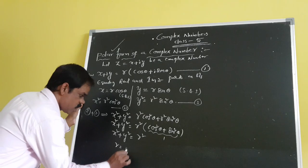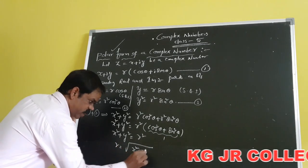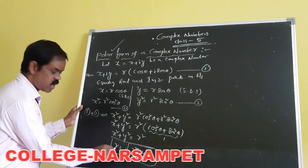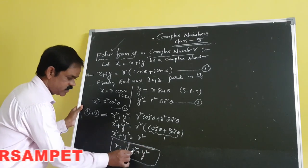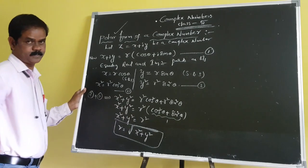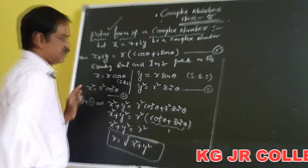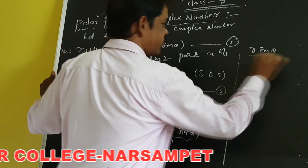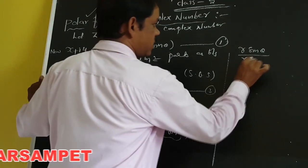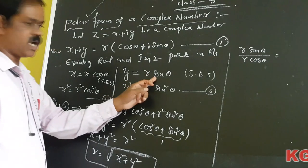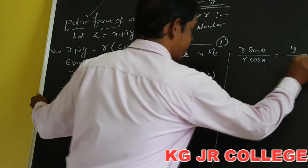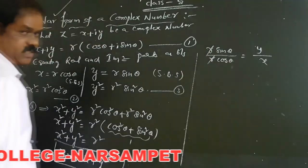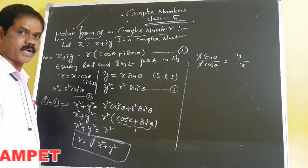Therefore, the value of r is equal to the square root of X² plus Y². This is the value of small r. Next, dividing R sin θ by R cos θ gives sin θ over cos θ, which equals tan θ. The R sin θ value equals Y and R cos θ value equals X, so Y divided by X gives tan θ. Therefore, tan θ equals Y by X.